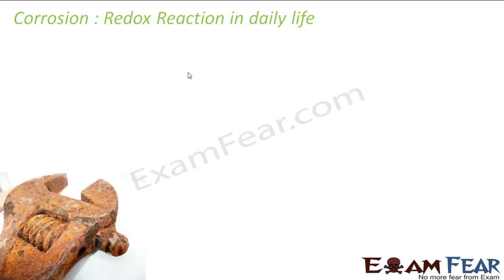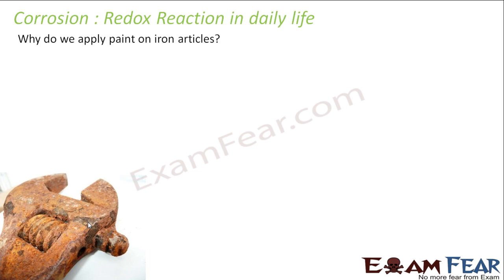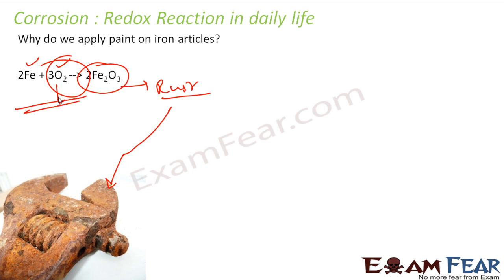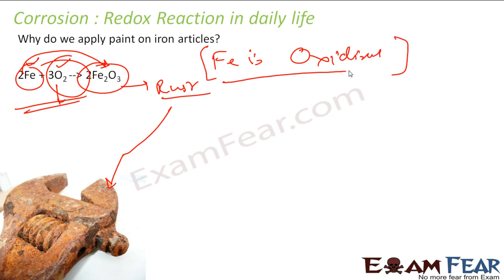Corrosion is an example of a redox reaction in real life. Iron objects get corroded — they rust. In corrosion, iron reacts with oxygen to form Fe₂O₃, which is rust. To prevent this, we paint iron articles so that the iron does not come into contact with oxygen. Without oxygen contact, Fe₂O₃ cannot form and rusting is prevented. The iron is gaining oxygen, so iron is oxidized.